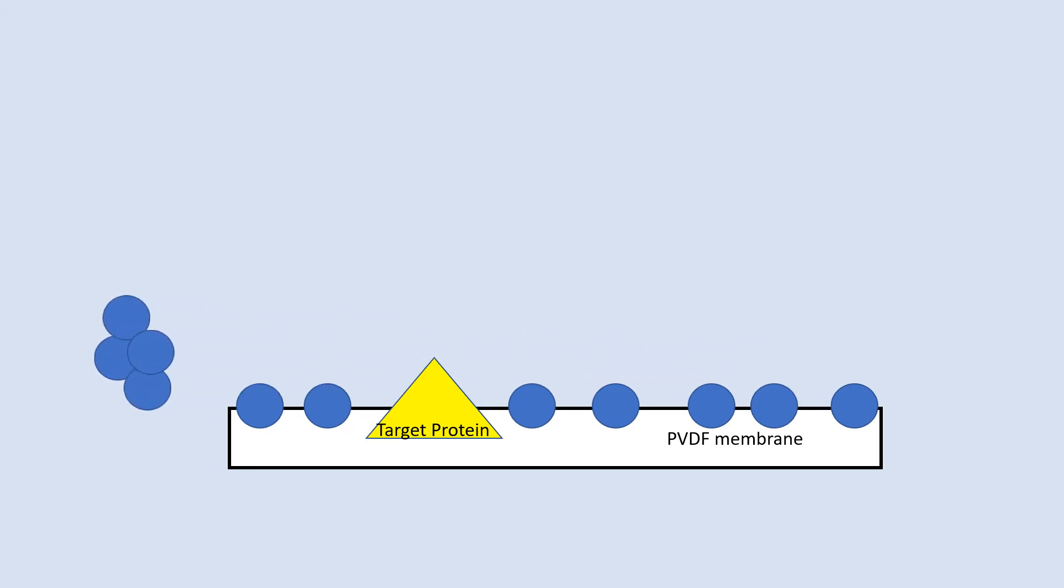Any excess blocking solution will be washed away. Following the wash, the membrane is incubated in primary antibodies. These primary antibodies are specific to the protein targeted and will bind to a His-tag encoded in the protein.